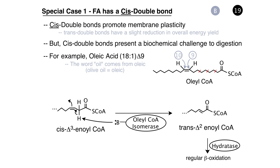The example I'm going to use is oleoyl coenzyme A. This acyl coenzyme A comes from oleic acid, which also has the shorthand notation 18-1 delta-9 — that is, there is a double bond nine carbons in from the carboxylate. The reaction shown in panel B goes through three rounds of beta oxidation, resulting in a cis delta-3 enoyl coenzyme A. The enzyme oleoyl coenzyme A isomerase will then remove the acidic hydrogen from the two carbon, repositioning the double bond.